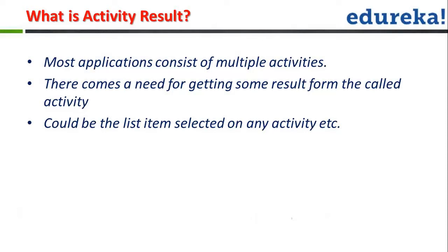So, Start Activity for Result — as the name itself suggests, you start Activity B for a result. You start the activity, you get the result, and again you come back to Activity A. That is the Start Activity for Result concept.